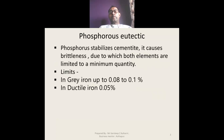Phosphorus stabilizes cementite, causing brittleness, due to which it needs to be limited to minimum quantity. The limits in gray cast iron for phosphorus should be 0.08 to 0.1% maximum, whereas in ductile iron it should be 0.04 to 0.05% maximum.